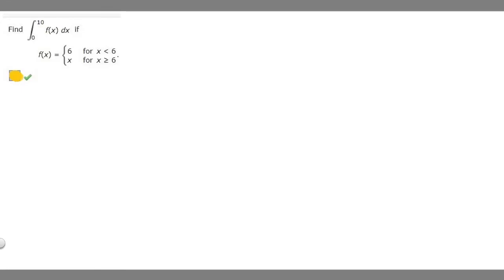So in this problem we're told to find the integral from 0 to 10 of f of x times dx if f of x is equal to 6 for when x is less than 6 and x for when x is greater than 6.